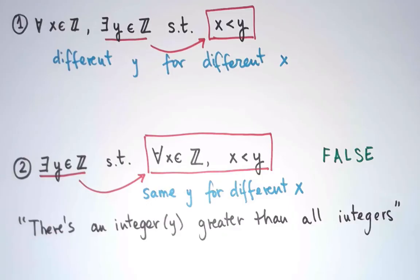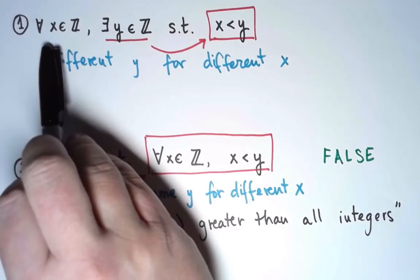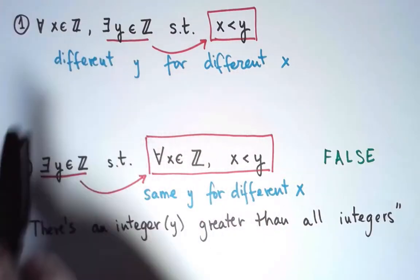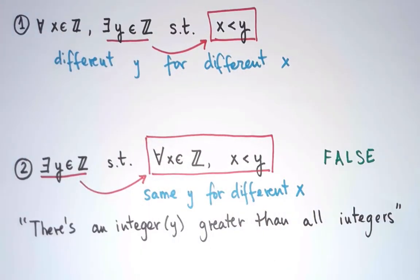As for the first statement, what it says is that for every integer x, I can find another one greater. So every integer is smaller than some other one.